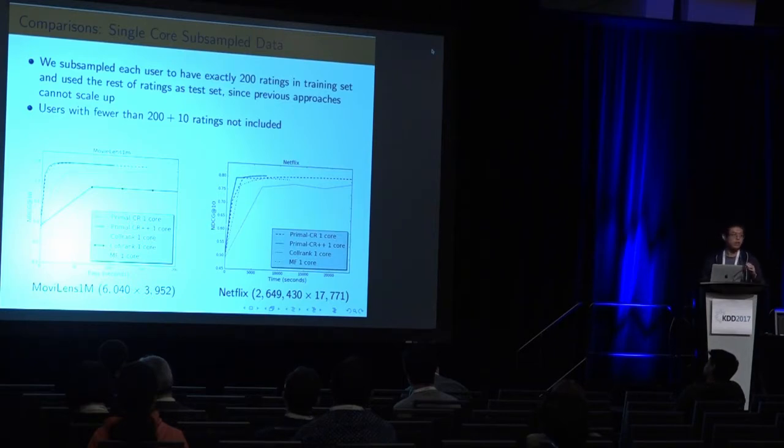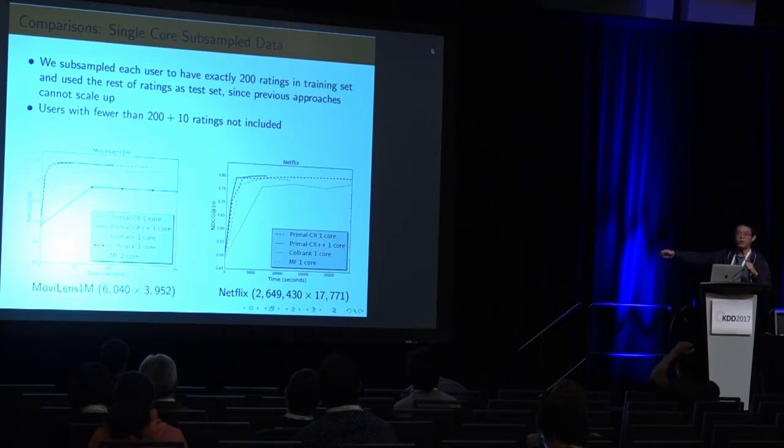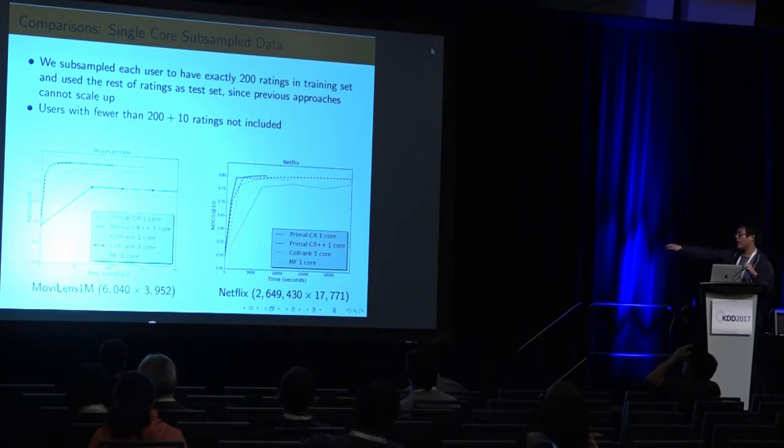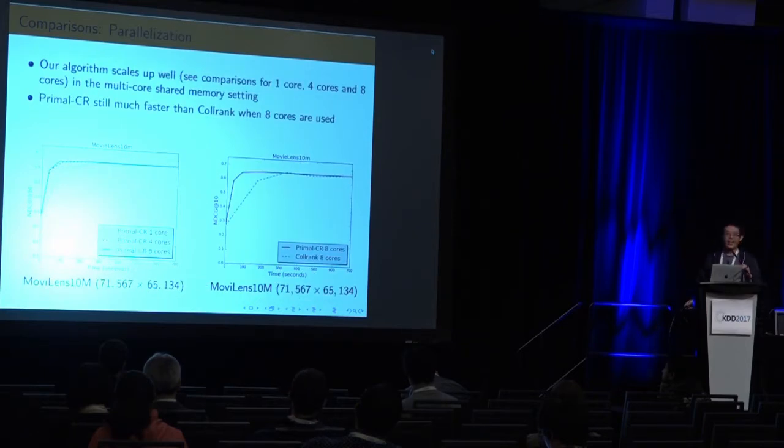I show my algorithm is much faster and much better than state-of-the-art. CoRank is here, and our method is here. Even for NIPS data, we have similar results. Our primal CR++ is the blue line. Even our slower version, the red line, is still much faster than CoRank. For the matrixization approach, it's relatively fast, but the problem is that it's not very good in terms of NDCG. By the end, I implement it in Julia. What I found out is when I really implemented it in C++, the speed up is even greater than in Julia. I'm comparing my Julia code with the other C++ code, which is not really a fair comparison, but we still won by a lot.